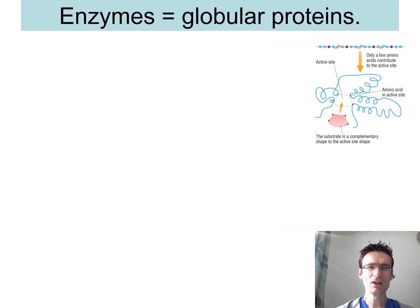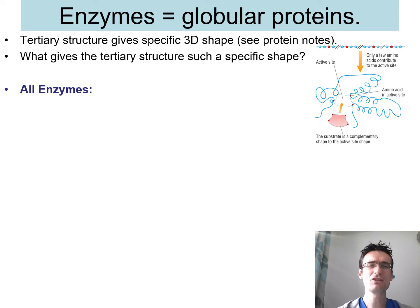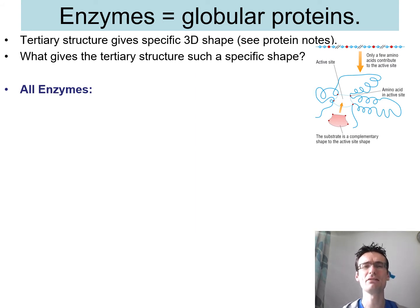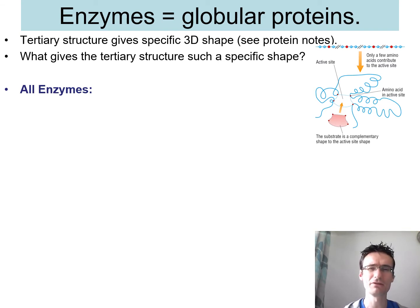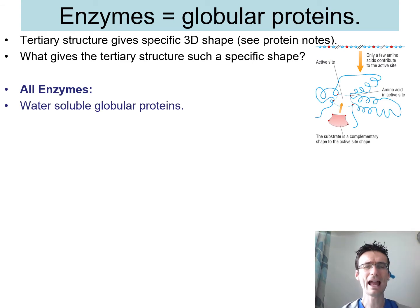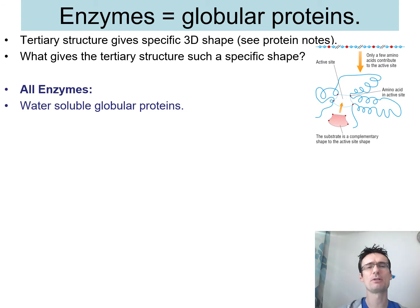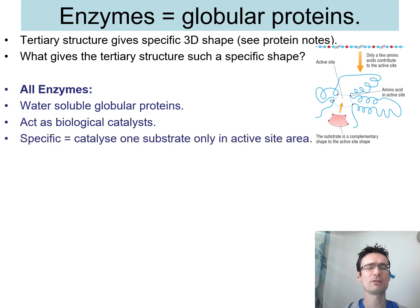Hopefully that is stuff you know from GCSE. At A-Level we need to know a little bit more. If you look at the protein structure video, the tertiary structure gives enzymes their 3D shape. The bonds involved in the tertiary structure — ionic bonding, disulfide bonding, hydrogen bonding, and hydrophobic/hydrophilic interactions — give them that shape. All enzymes are water-soluble proteins, meaning they will dissolve in water. They are globular, with a high 3D shape, as opposed to fibrous proteins. They act as biological catalysts.